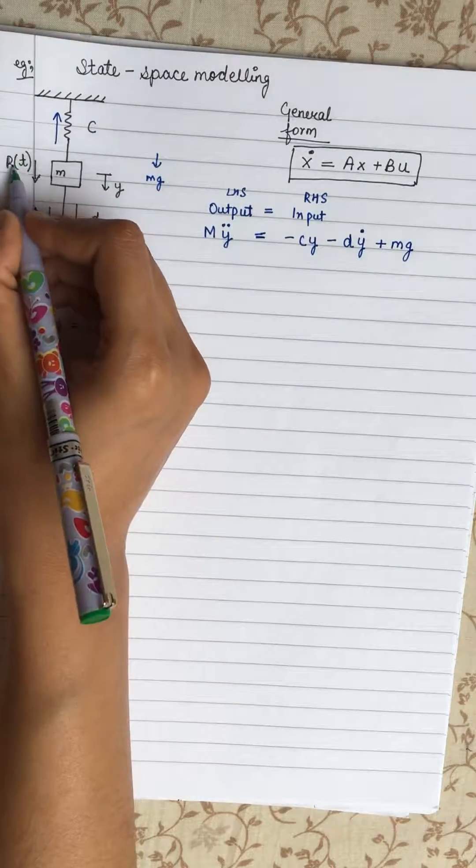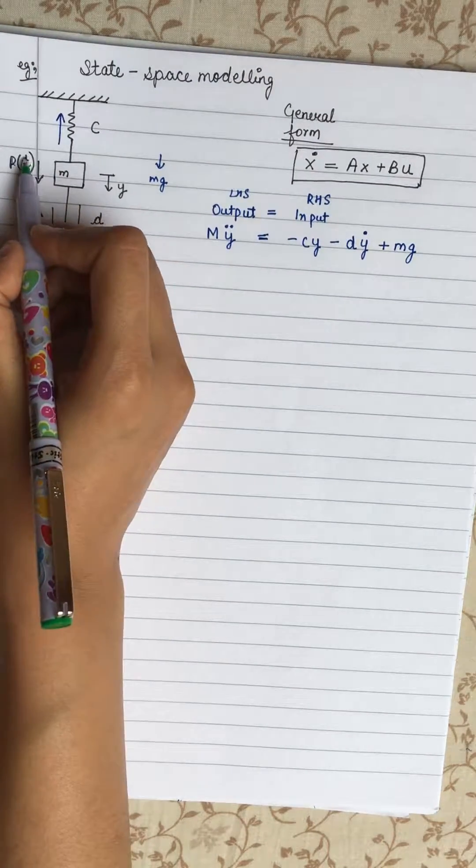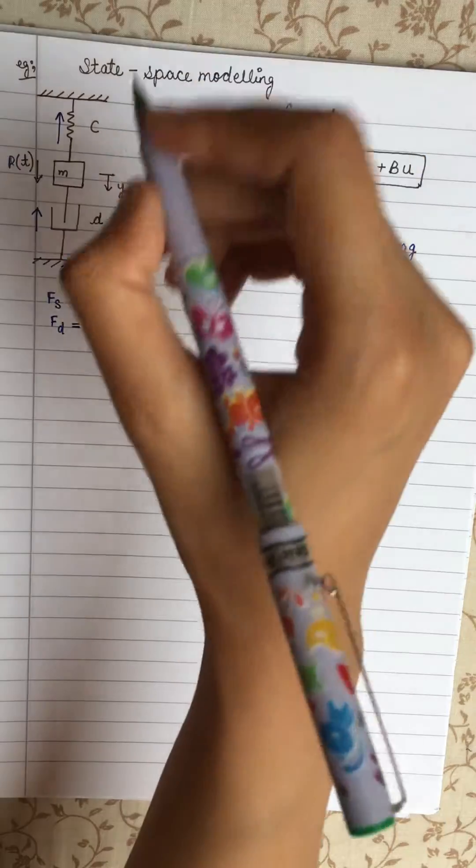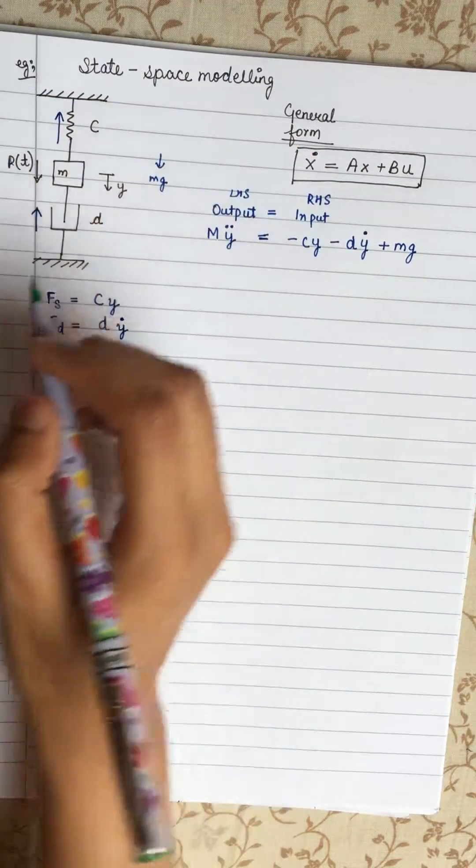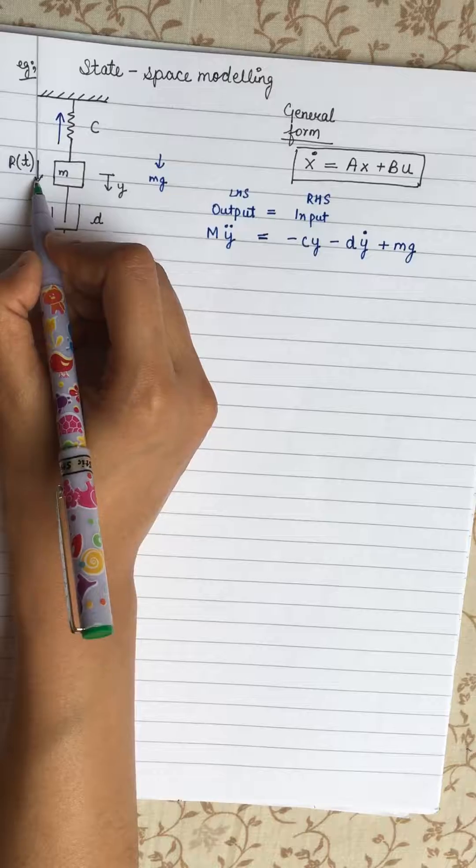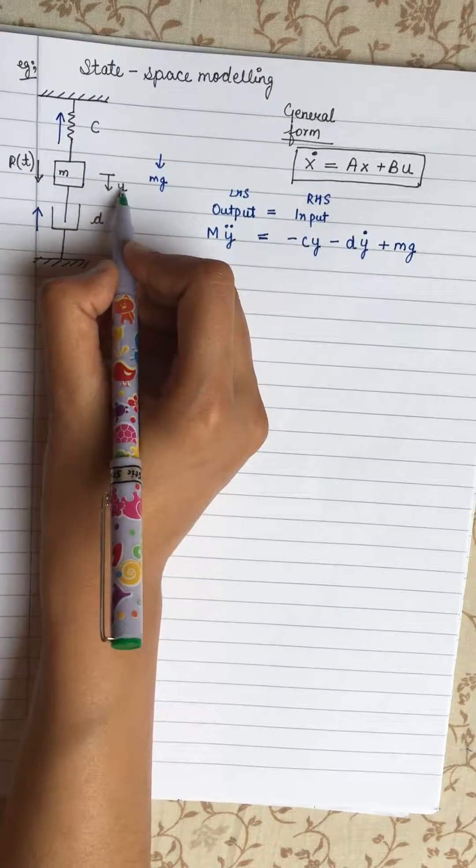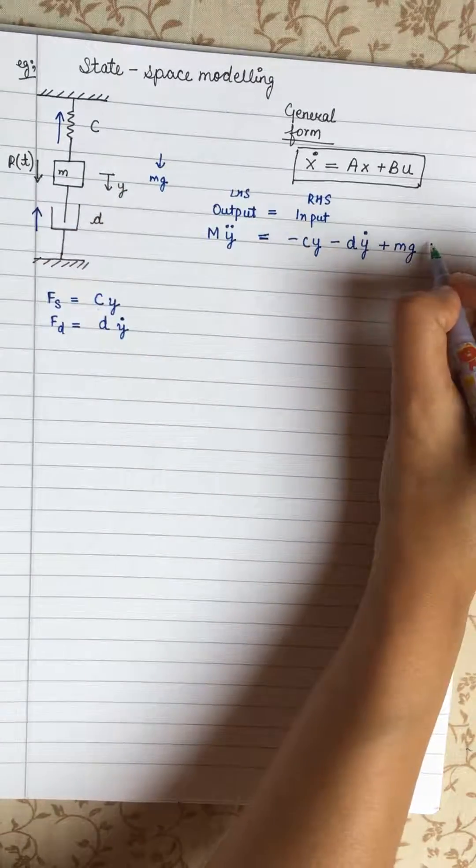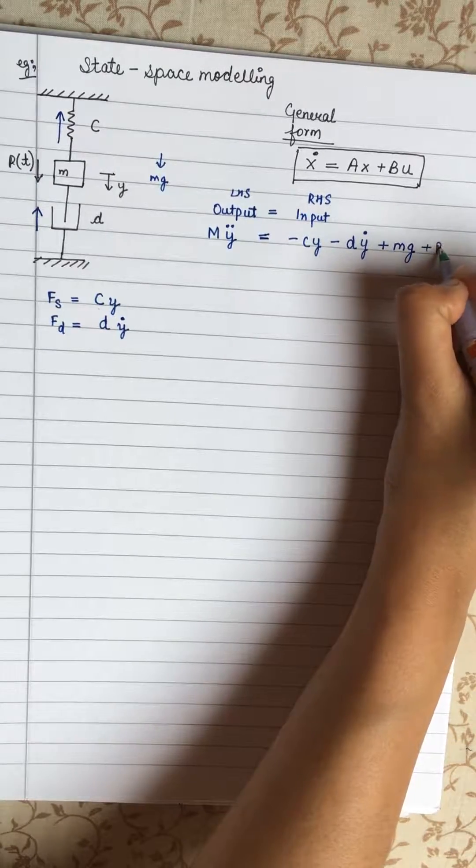Now this input is acting. This is input because we will shift this mass up and down because this is fixed already from top. So this is our input. It's also acting in the same direction of displacement. So it will be plus P T.